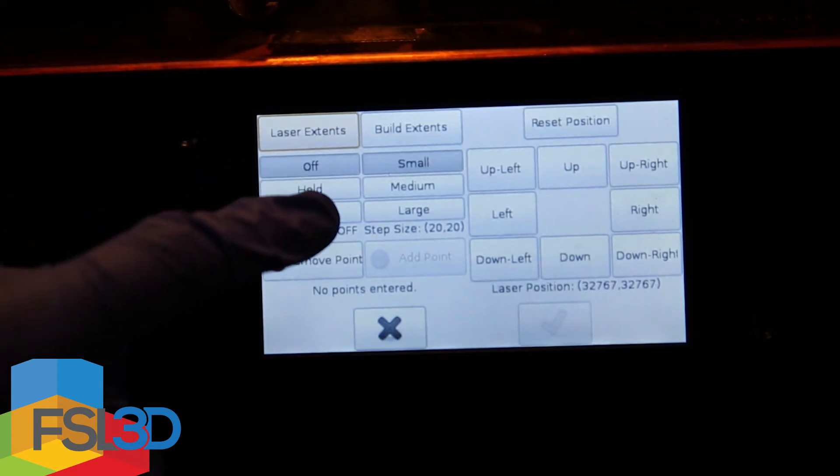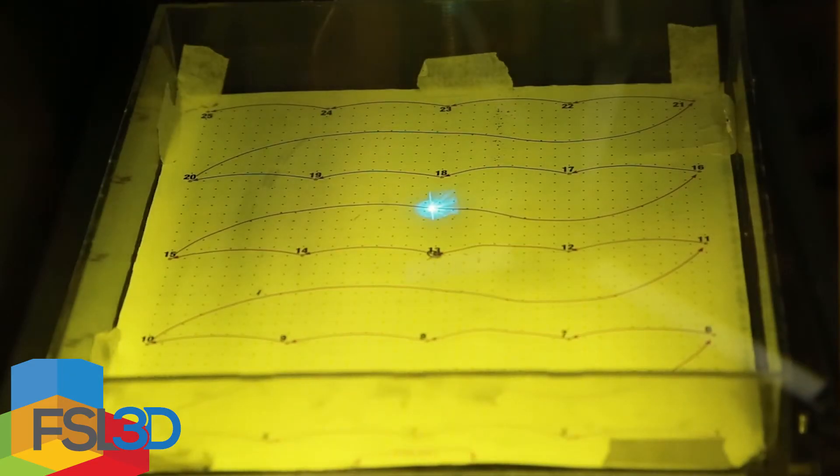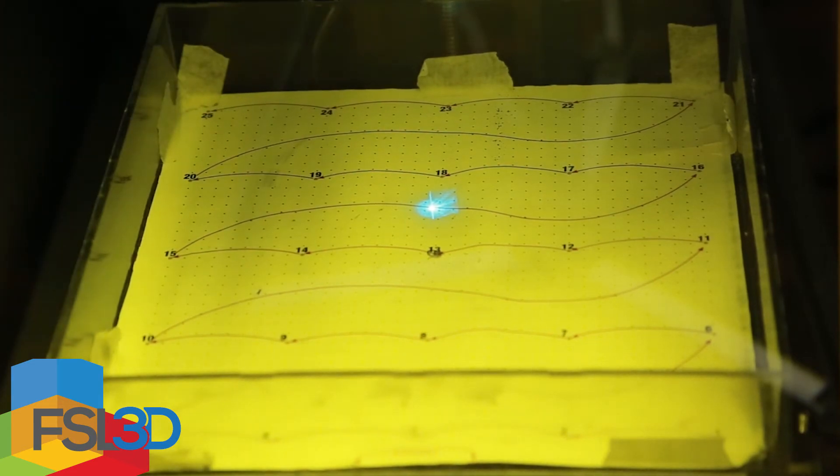From this menu, turn the laser on. You should see the laser point somewhere on the vat. We want to position the laser to the center point on the vat.